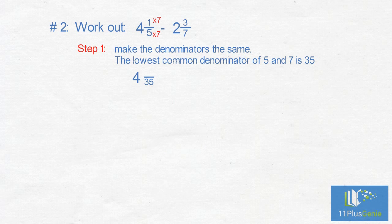So, 1 times 7 equals 7. We times the 7 by 5 to get 35. We must times 3 by 5, which gives us 15. We now have 4 and 7 thirty-fifths, take away 2 and 15 thirty-fifths.